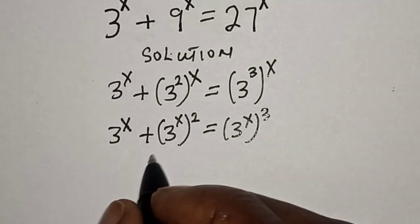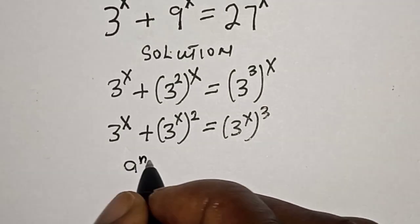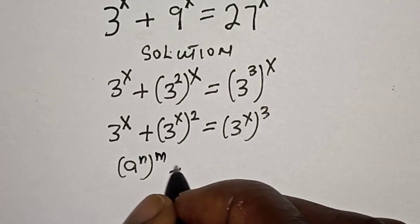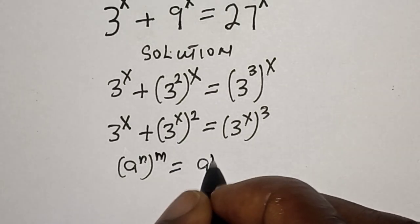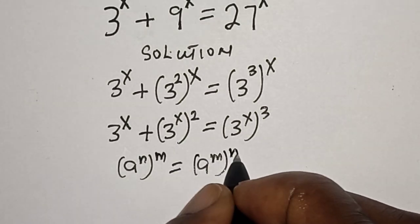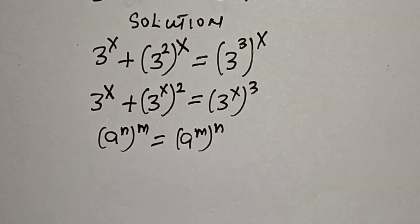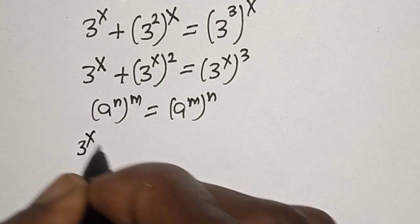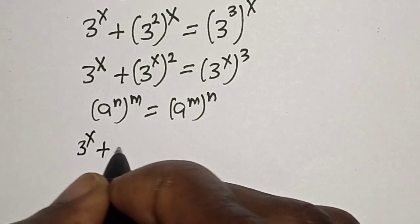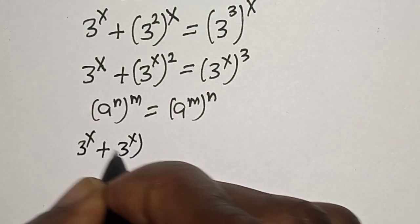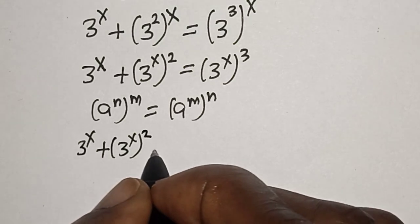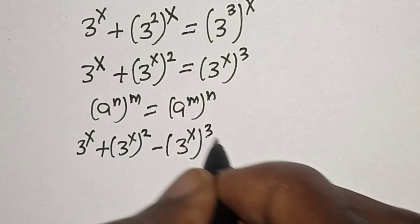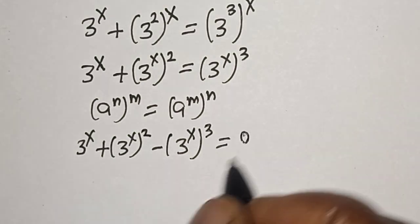That is, from the rule that 3 raised to power n raised to power m is equal to 3 raised to power m raised to power n. Now we have 3 raised to power s plus 3 raised to power s squared, minus 3 raised to power s cubed, is equal to 0.